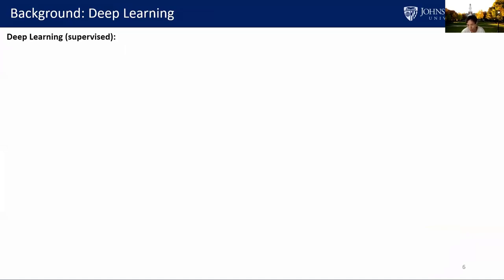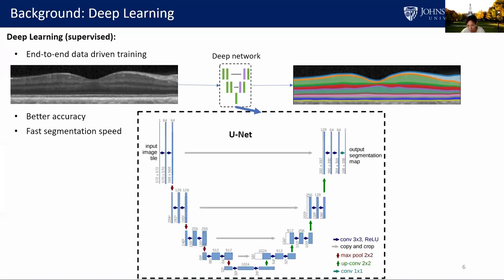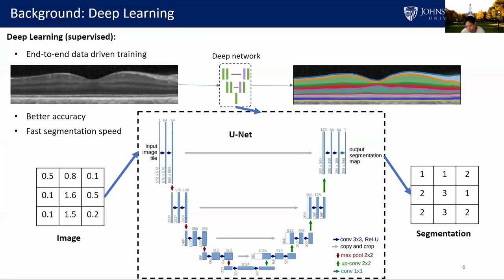Deep learning is a type of machine learning method where the network learns the mapping from input image to output segmentation automatically from training data. The end-to-end data-driven training greatly simplifies segmentation algorithm development. Recent deep learning methods have achieved the best performance in most major segmentation benchmarks, and segmentation speed is orders of magnitude faster than conventional methods. A widely used segmentation network in medical imaging is UNET — a U-shaped network with a contracting encoder and expansive decoder. We use deep learning for OCT image analysis for better accuracy, inference speed, and algorithm flexibility.